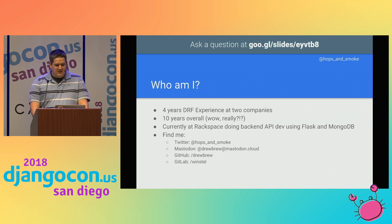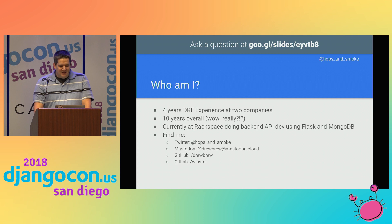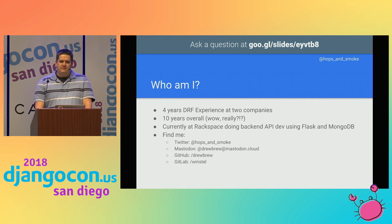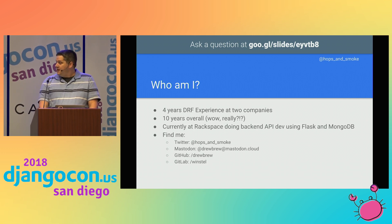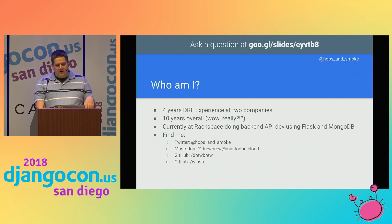Here's a rough overview of how I got to where I am today. I've had about four years of DRF experience, starting way back when South migrations were still a thing — not built into Django yet — and keeping going all the way through Django 2.0. My degree is in wireless and electrical engineering from Auburn, War Eagle, in 2008. I've done a mix of defense and Internet of Things work since then, before coming to Rackspace, where I've been since June of this year, developing REST APIs using Flask and MongoDB. I've got code up on GitHub and GitLab — you can find me there. I'm also on Twitter and Mastodon.